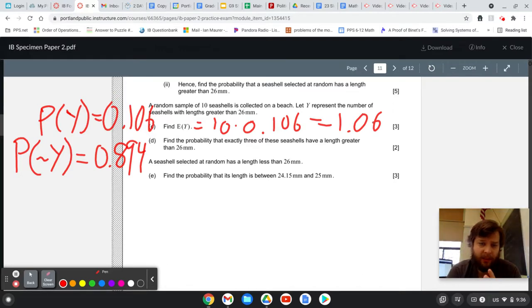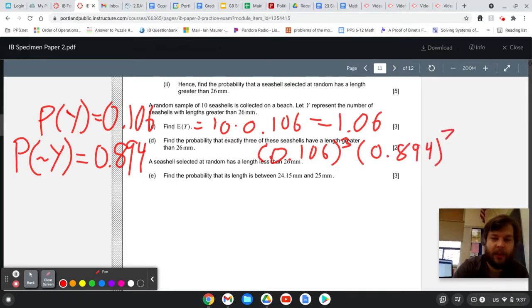Now find the probability that exactly three of these seashells have a length greater than 26 millimeters. And so what we want to think about is three are bigger than there are seven that are smaller. And so the probability of that would be you're going to have 0.106 to the third, because three of them are bigger. But then there are seven of them that are smaller, 0.894 to the seven. But then that's imagining that the first three that you find are longer and then the next seven are shorter. So you actually need to think of how many different ways can you rearrange those objects. So you have 10 seashells and you're choosing three of them that are going to be the ones that are longer.